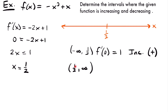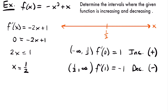For the interval from 1 half to infinity, I'll test x equals 1. Plugging into the derivative: negative 2 times 1 plus 1 equals negative 1, which is negative. So the function is decreasing on this interval. Therefore, f of x equals negative x squared plus x is increasing from negative infinity to 1 half, and decreasing from 1 half to infinity.